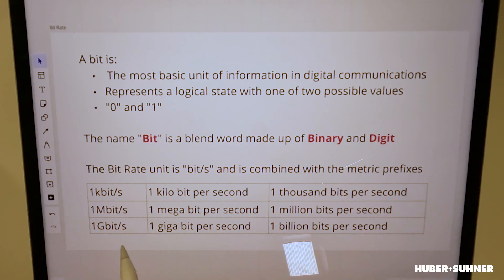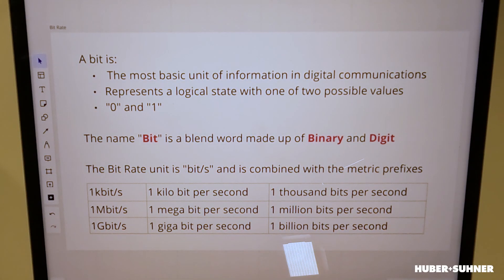The bit rate is then combined with metric prefixes to describe higher bit rates — so you've got the kilo, mega, giga, or terabit.